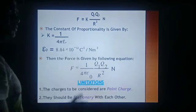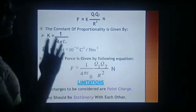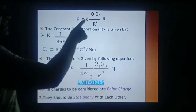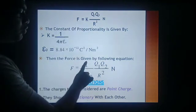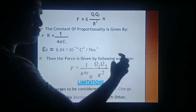Now the definition of epsilon 0 we will discuss later. When we will put the value of K in this formula, we will get F is equal to 1 upon 4 pi epsilon 0 q1 q2 upon R square. N is Newton.